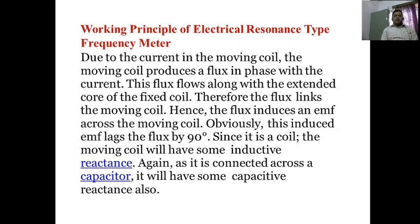Due to the current in the moving coil, the moving coil produces a flux in phase with the current. This flux flows along the extended core of the fixed coil, and therefore the flux links the moving coil, inducing an EMF across the moving coil. Obviously, this induced EMF lags the flux by 90 degrees.